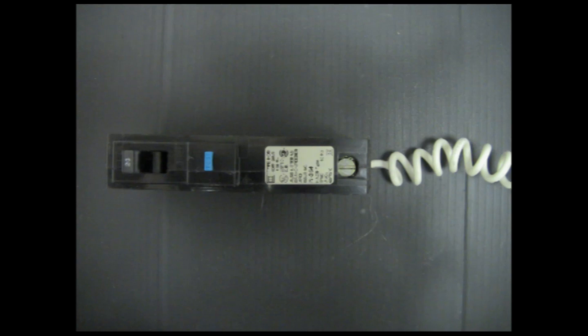An arc fault breaker detects a dangerous arc in the circuit and immediately shuts the power off, thus preventing a potentially deadly fire.